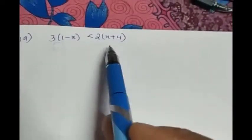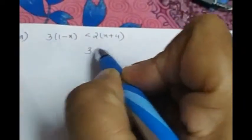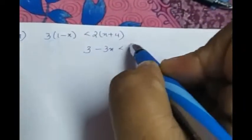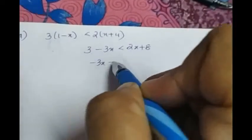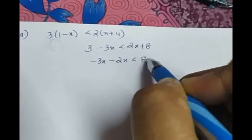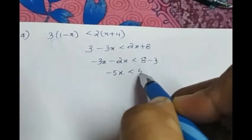Next one. 3 into 1 minus x less than 2 into x plus 4. So when we open, what we get is 3 minus 3x less than 2x plus 8. Collect x terms to one side: minus 3x minus 2x less than 8 minus 3.